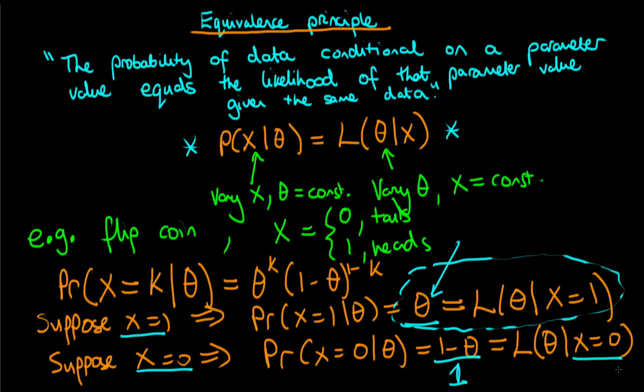And similarly if we did the same when x is equal to zero we would also find that it's not a valid probability distribution. So in this paradigm when we hold the data constant and we vary the parameter we do not have a valid probability distribution and we call it a likelihood.